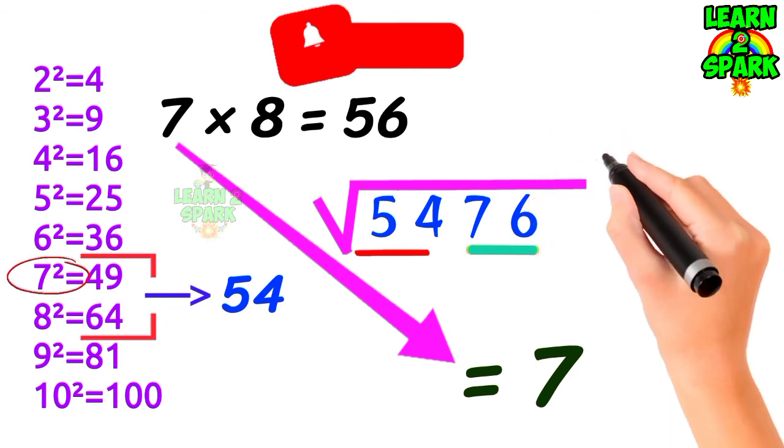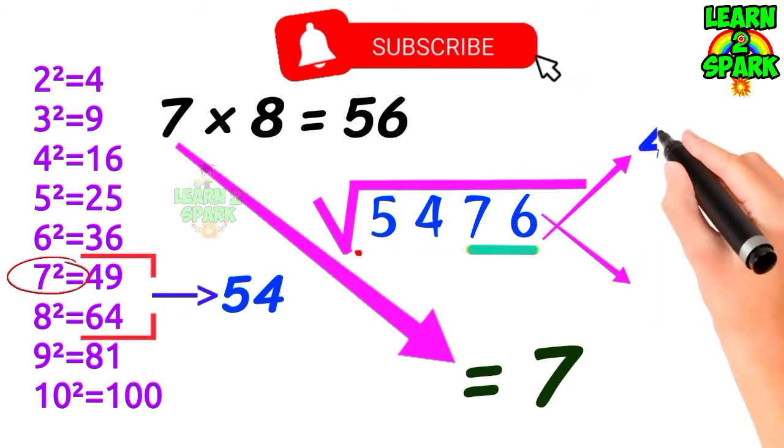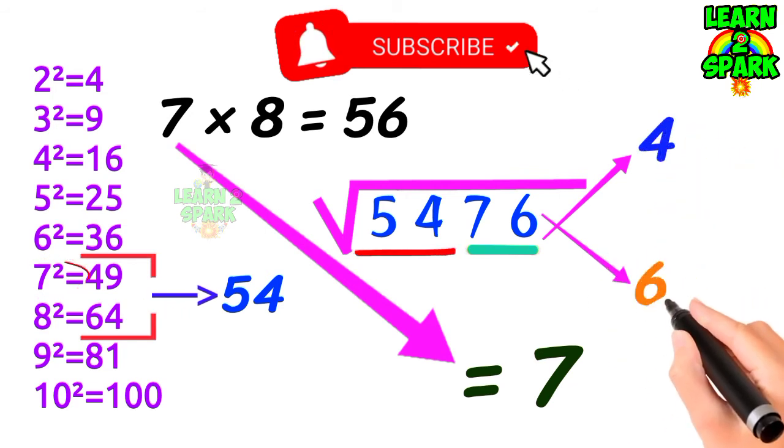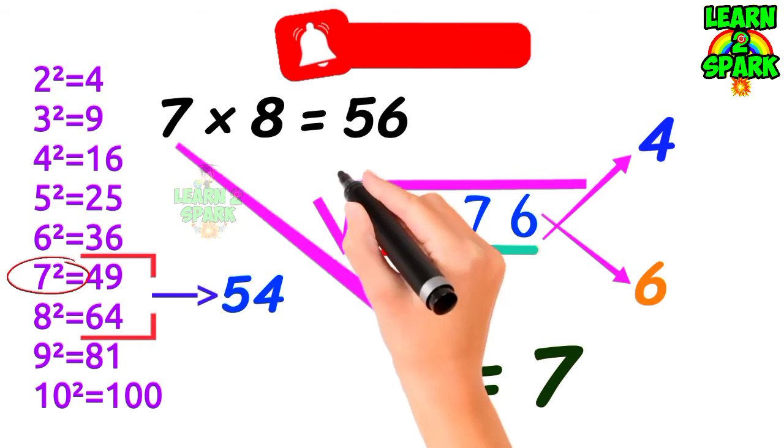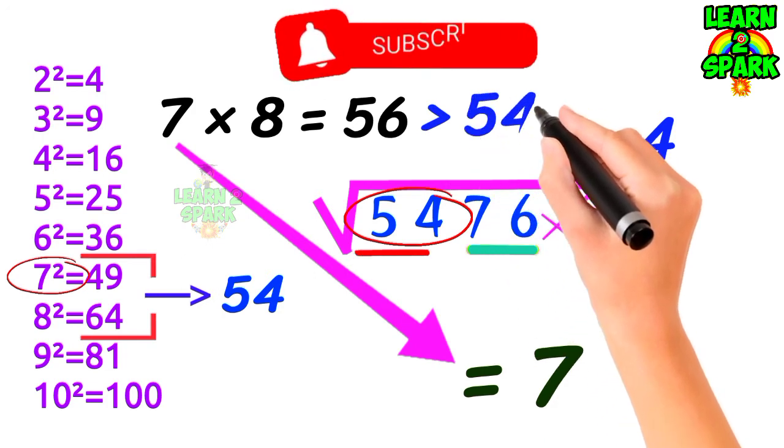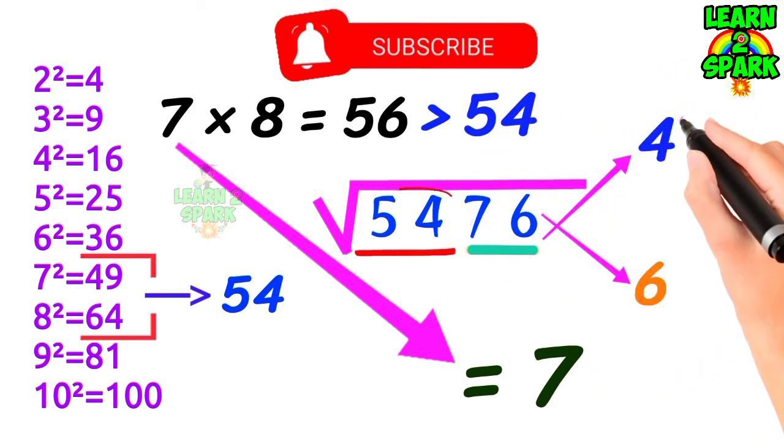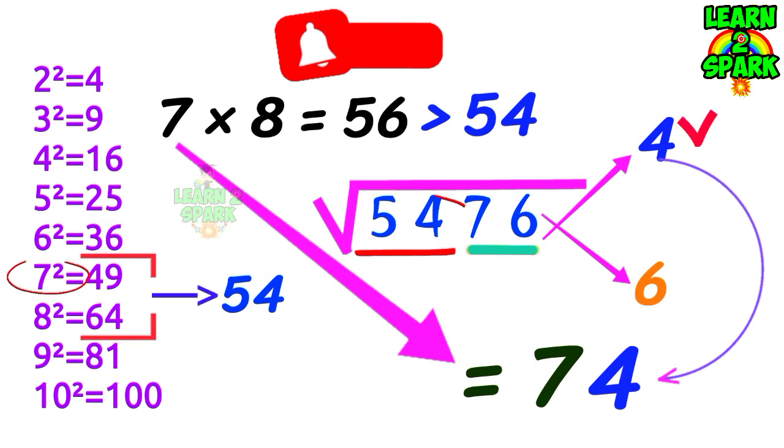Now consider the units place of the number, that is 6 here, which comes from the squares of 4 and 6. Now which one to take for your final answer, 4 or 6? For that you should consider the first group which contains 54. As 54 is less than the last multiplication result 56, so you should consider the least number which is 4 here and take it down for your final answer. So your required root is 74.